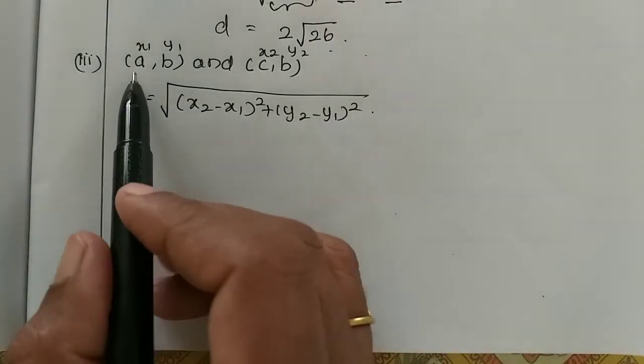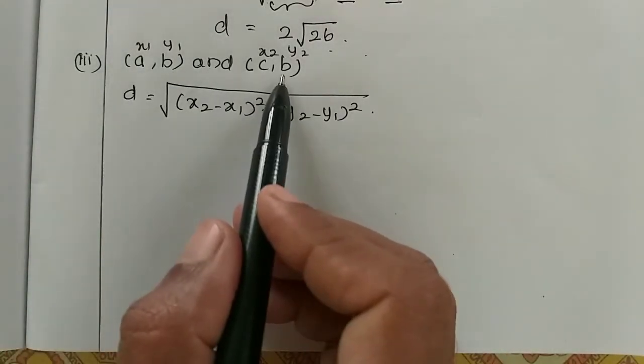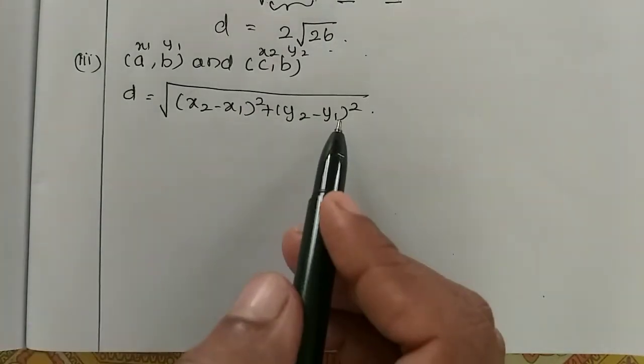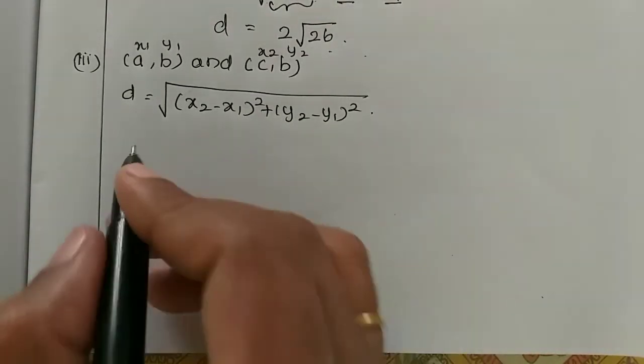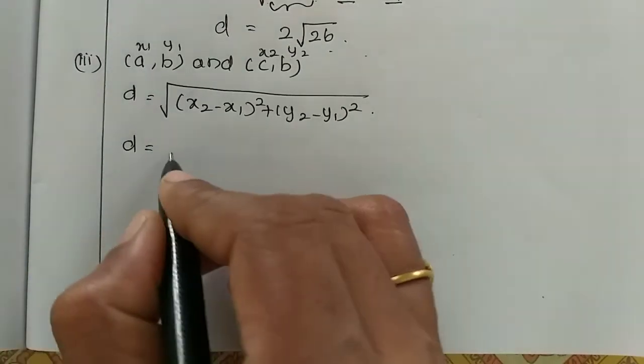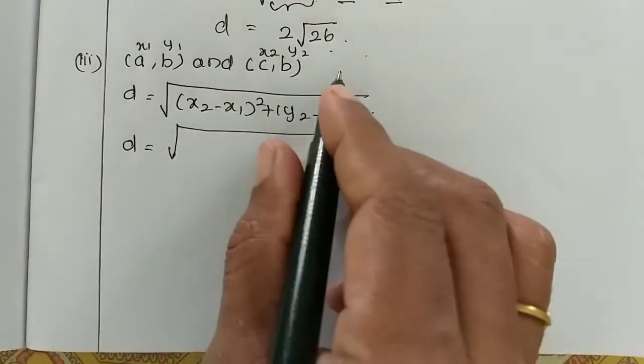Third subdivision is (a,b) and (c,b) given. And distance formula substitute and the distance is found. So d is equal to x1, y1, x2, y2 mark.